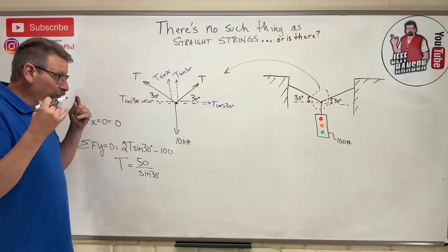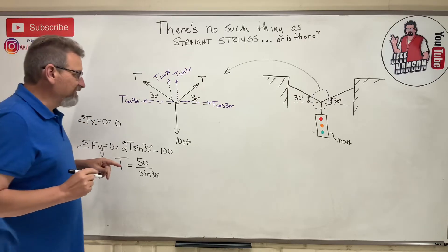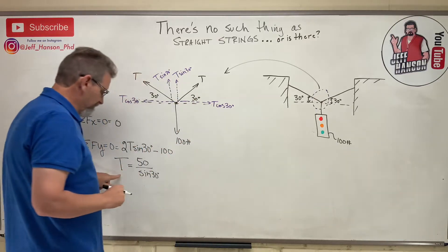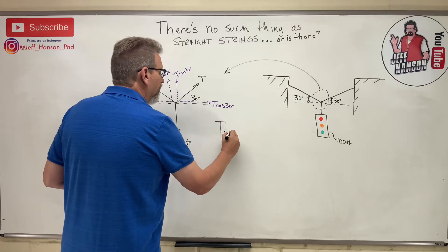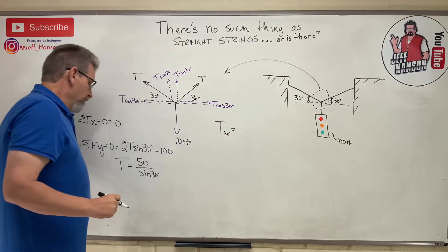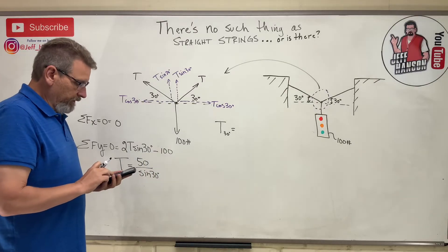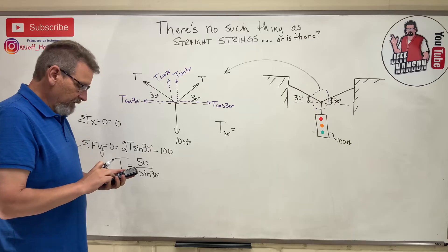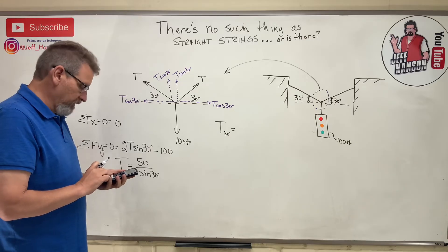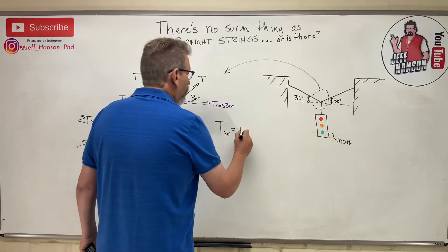Let's see what the tension in those two cables are. T for that 30 degree angle is equal to - where are you calculator? - 50 divided by the sine of 30 equals 100.